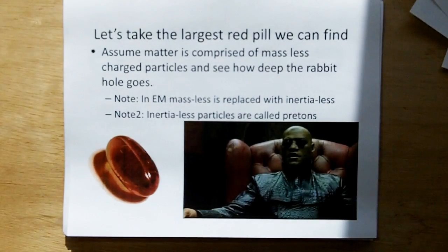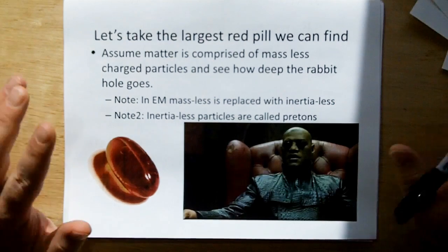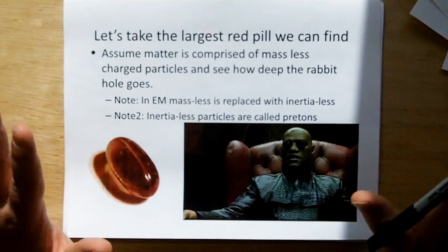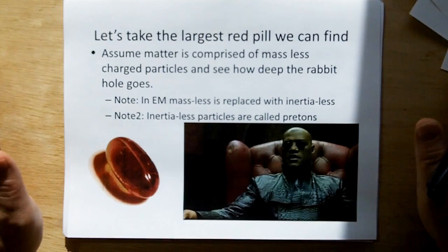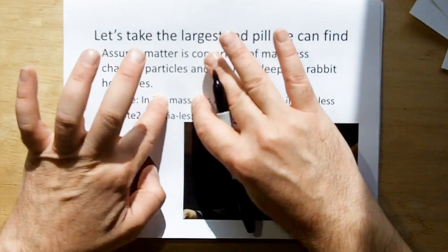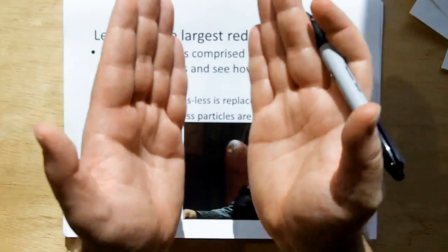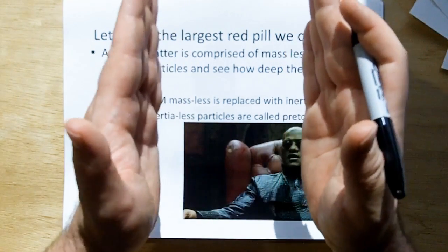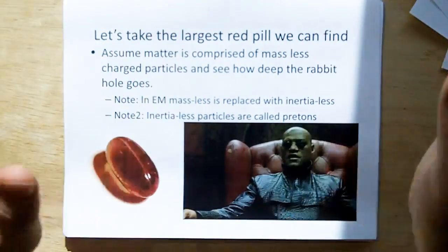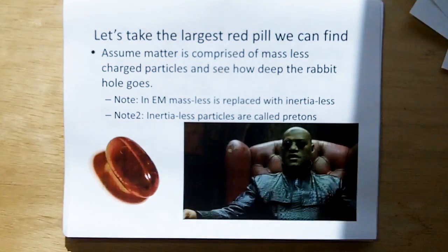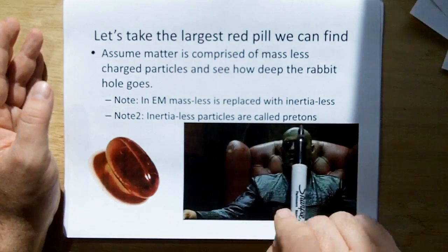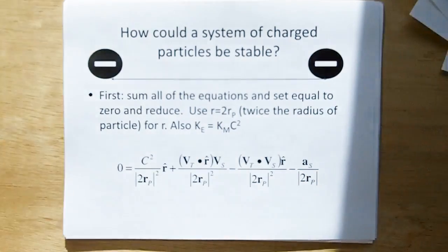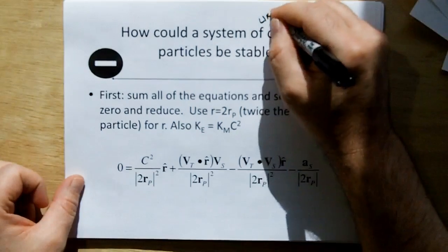And so here we have the first electromagnetic model for inertia. So let's take the largest red pill we can find and let's assume, let's make an assumption, an extrapolation, that matter is comprised of massless charged particles and see how deep the rabbit hole goes. Note, in ethereal mechanics, massless particles are replaced with the concept of inertialess, because mass is a quantity of stuff. Over the years physicists have joined mass and inertia into the same thing. And just like they had to separate weight from mass earlier, we now have to separate inertia from mass, because now inertia is a property of matter. Also, inertialess particles are called pretons. My eight-year-old nephew at the time came up with that word.